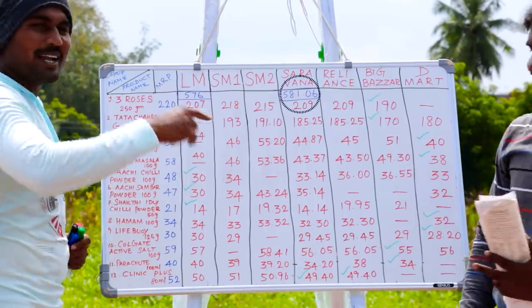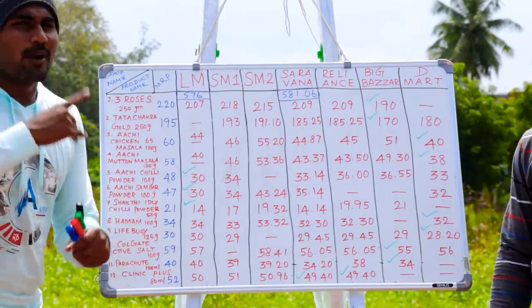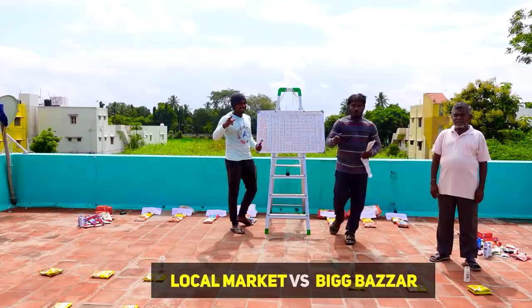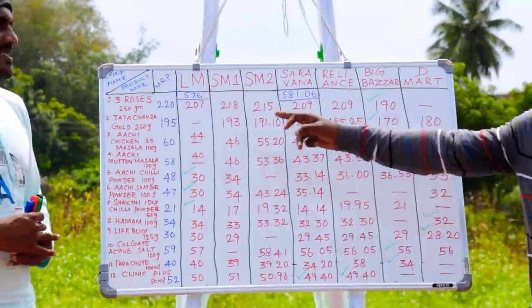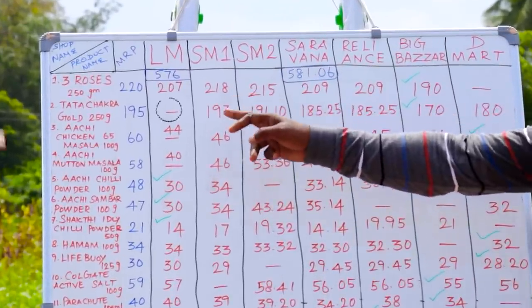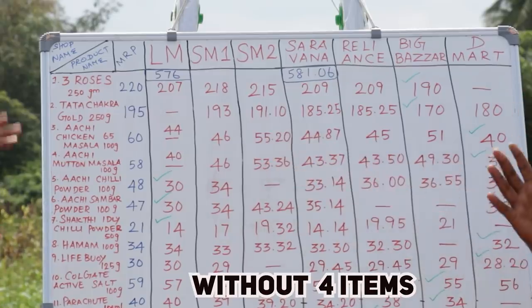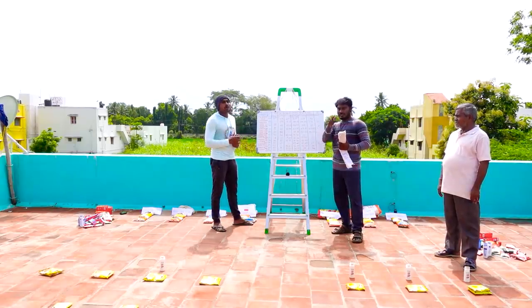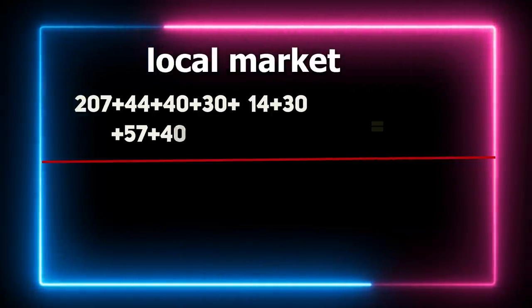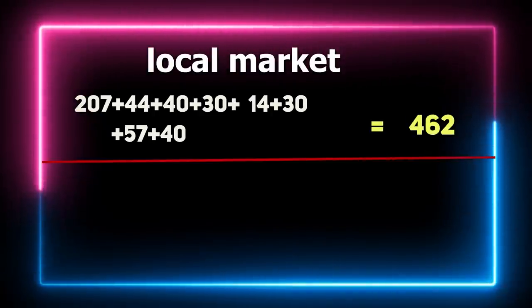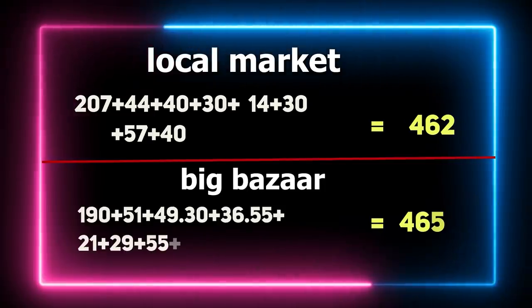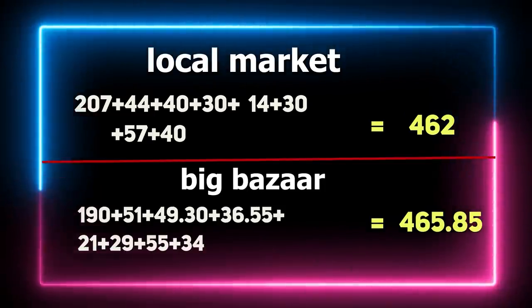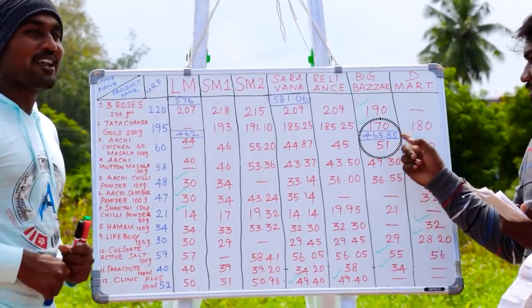The total is 48 to 58. In the local market, the overall price is 462. Big Bazaar overall price is 465.85. So who is the winner? It's very close to the local market — the price is less than the local market by 3.80.